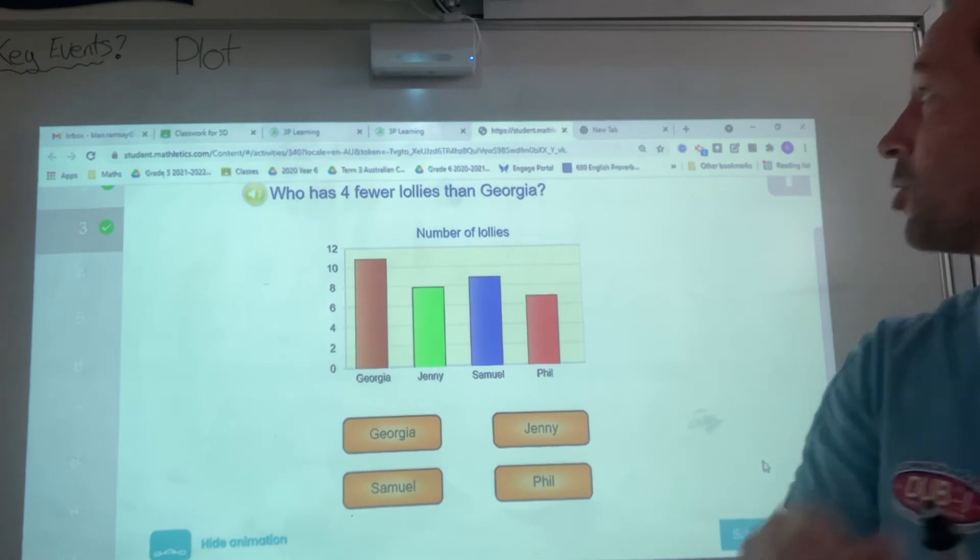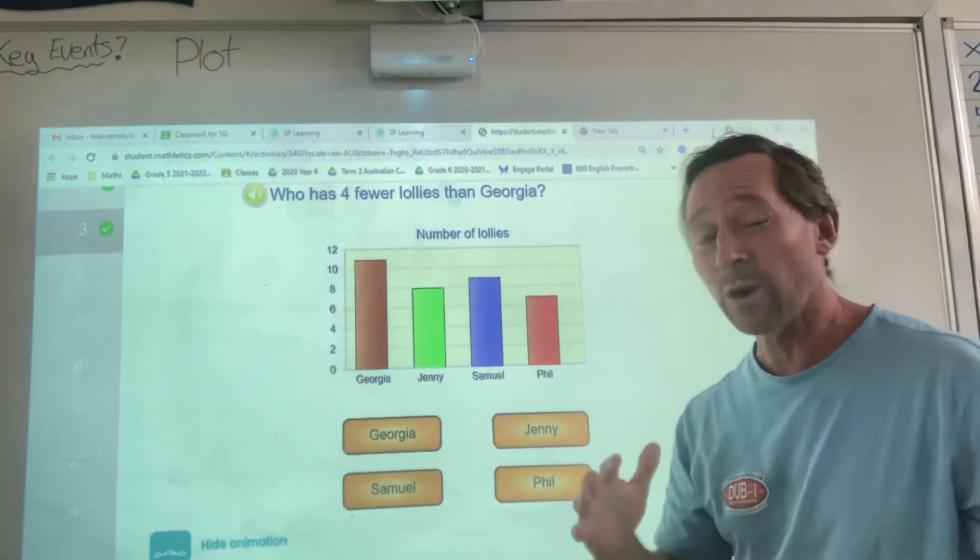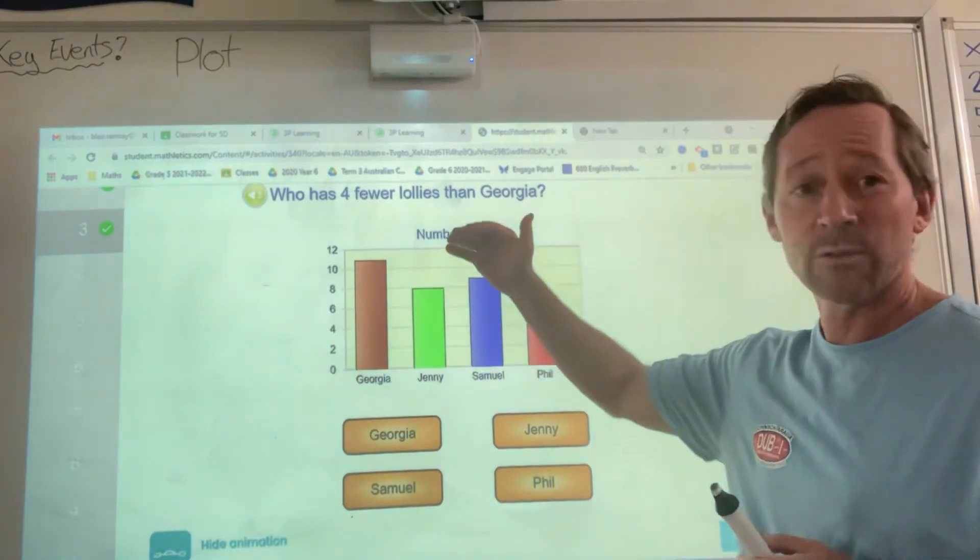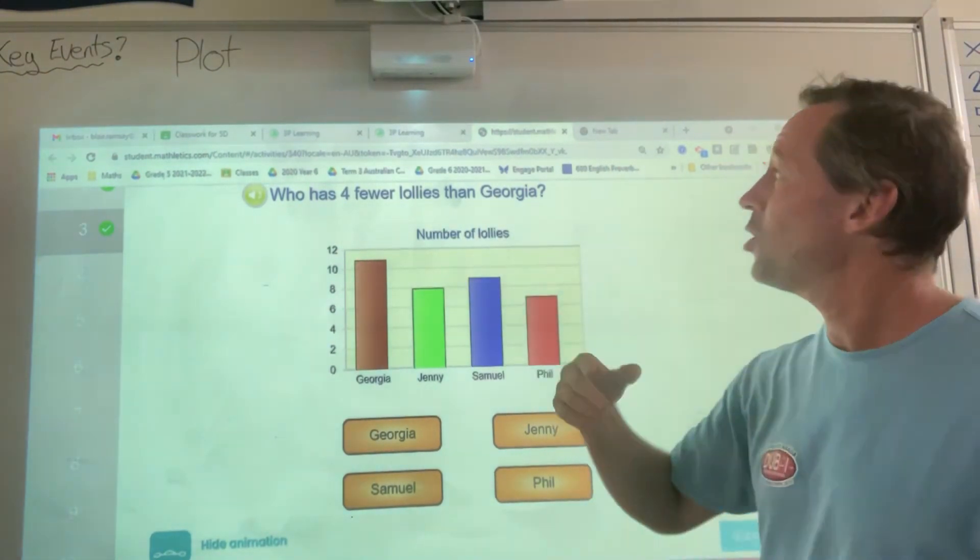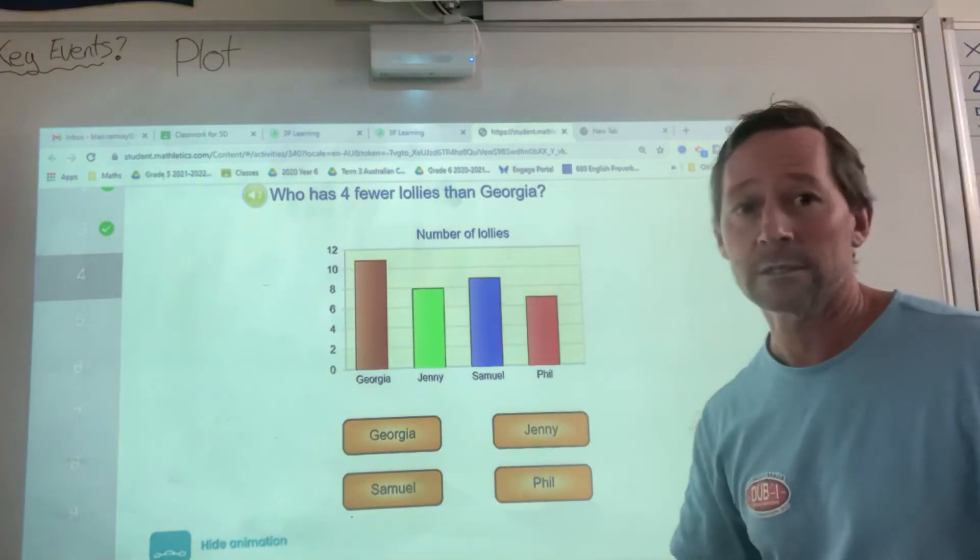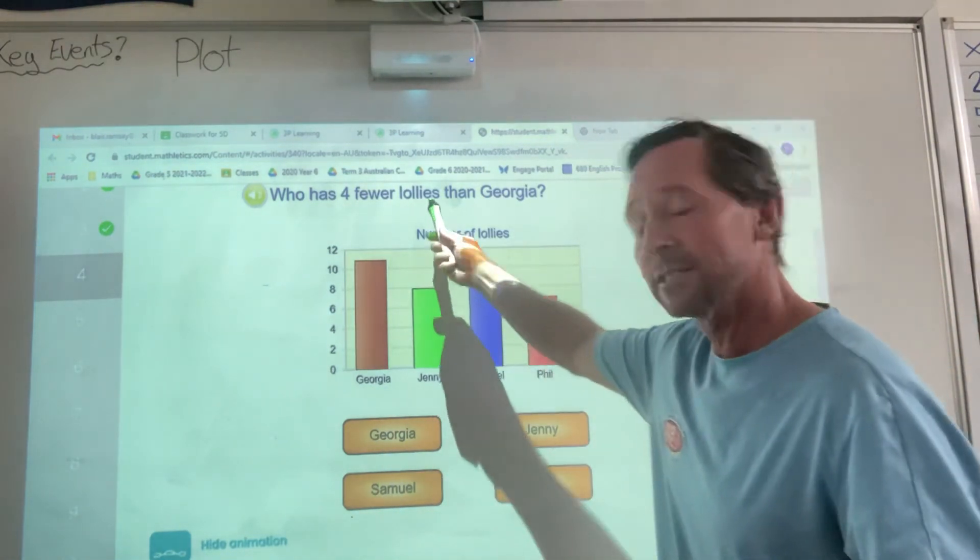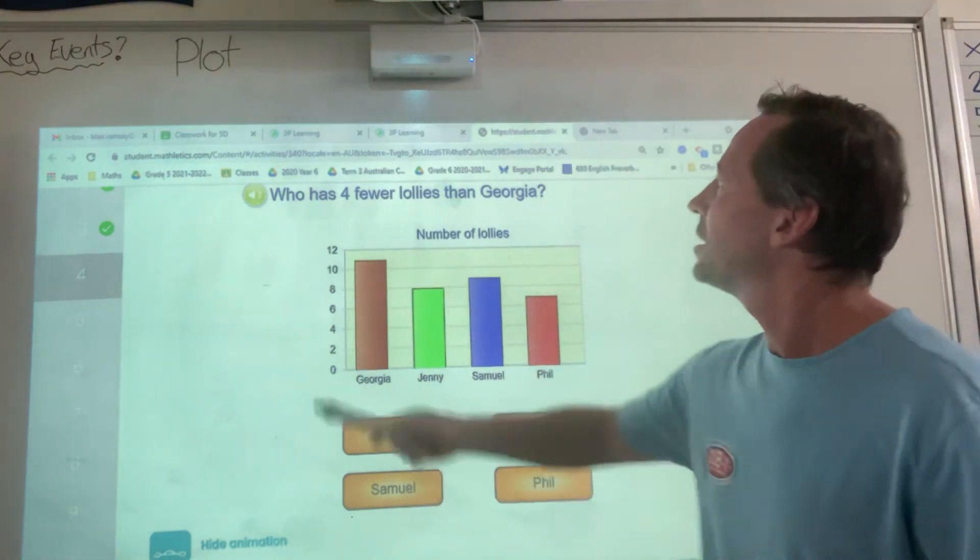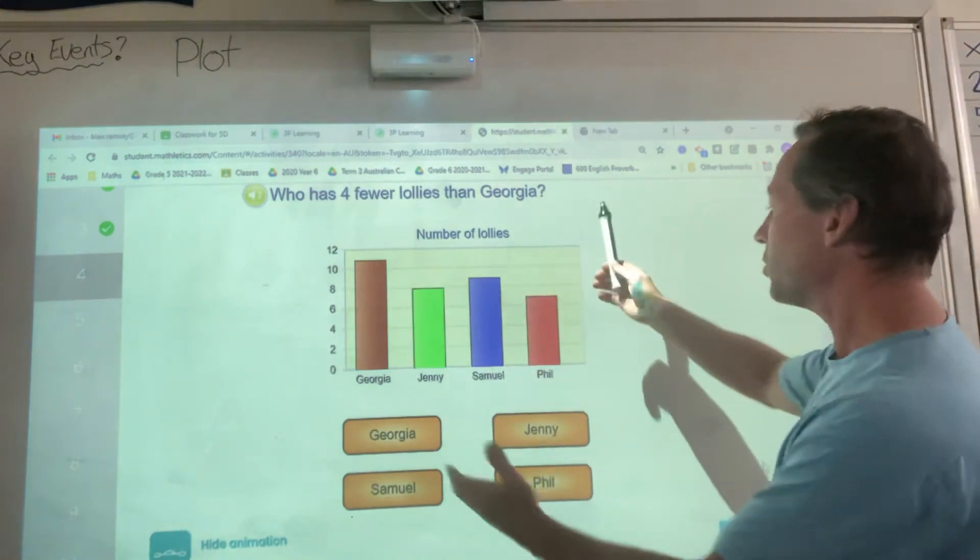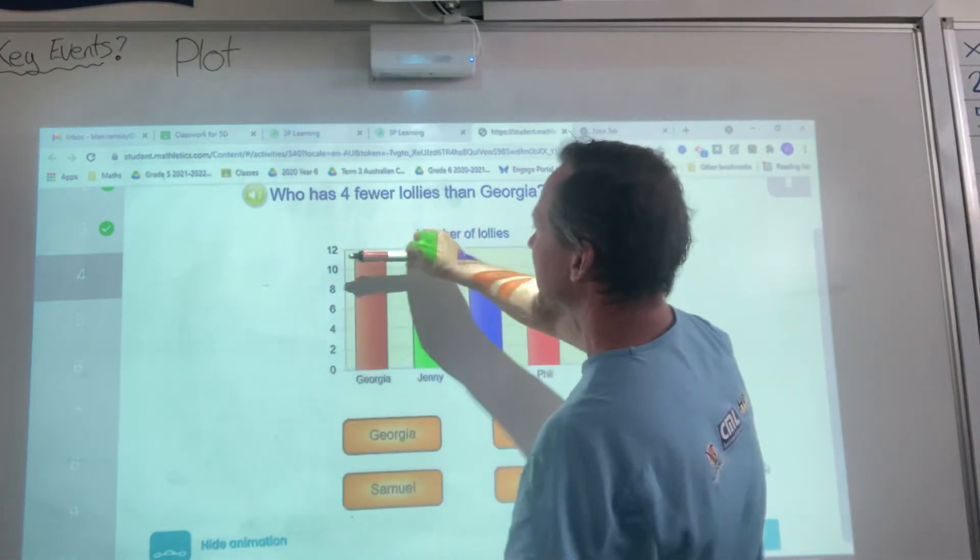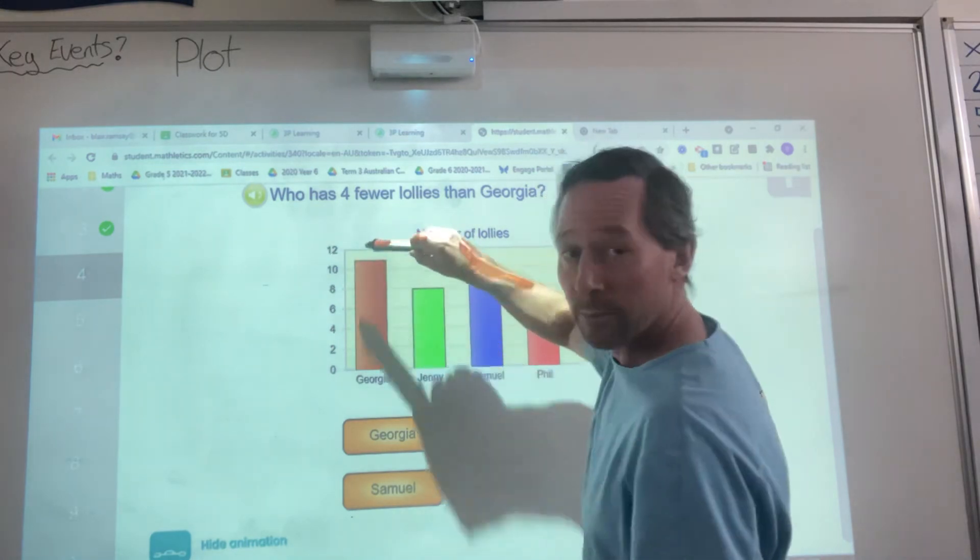Who has 4 fewer, again, think of the vocab, the language, the words that they're using. In other words, fewer might be less. Who has 4 fewer lollies than Georgia? Now, in New Zealand, we've used lollies. Other places might use candy. So, there's sweets. Who has 4 fewer lollies than Georgia? First, I look for Georgia. Here she is. She has 11. I might even write that on top. 11.